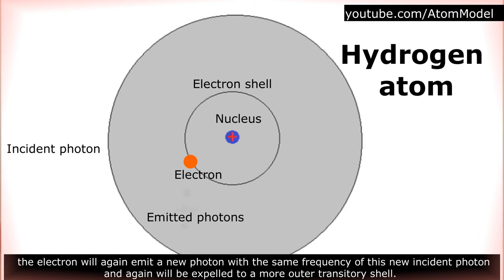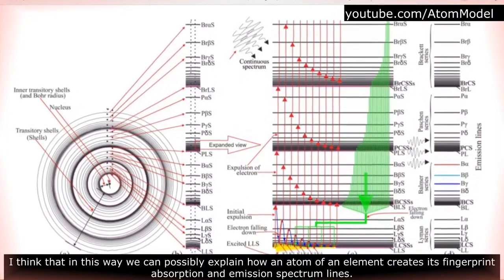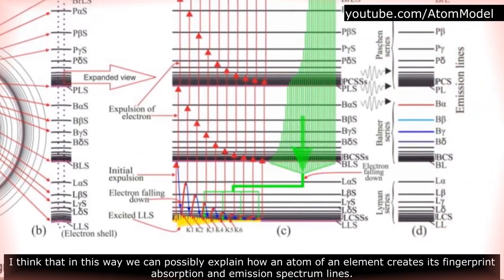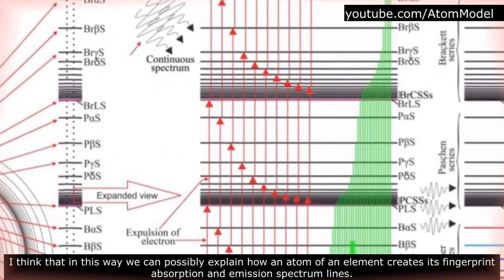the electron will again emit a new photon with the same frequency of this new incident photon, and again will be expelled to a more outer transitory shell. I think that in this way we can possibly explain how an atom of an element creates its fingerprint absorption and emission spectrum lines.